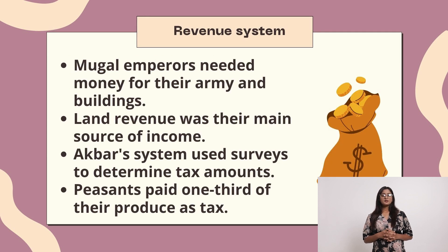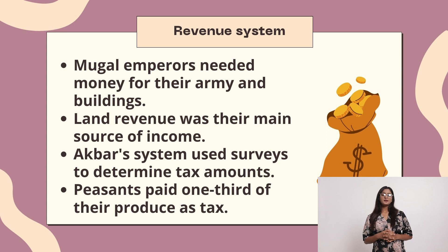Mughal Emperors needed money for their army and buildings. Land revenue was their main source of income. The survey system was used to determine taxed amounts. Peasants paid one third of their produce as tax.